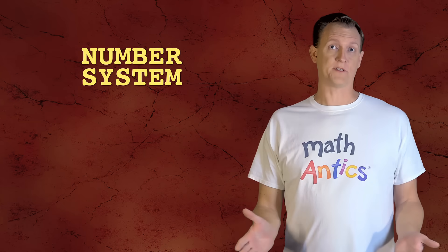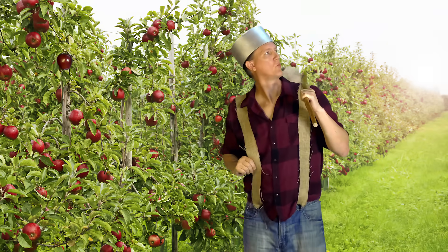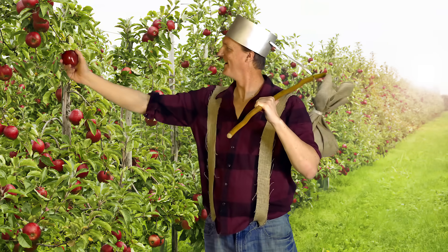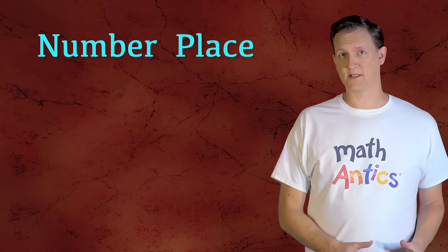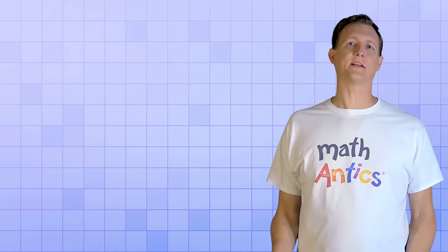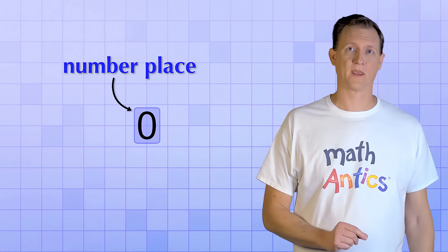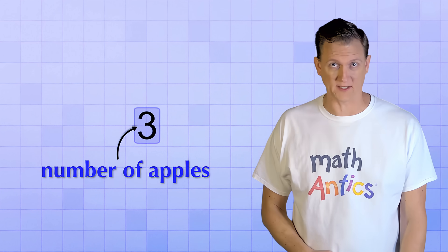To see how our number system uses these digits to represent amounts, let's pretend that we have an apple orchard full of apple trees and each of these trees is loaded with big juicy red apples that we need to pick and then count for our records. We're going to use something called a number place to count.